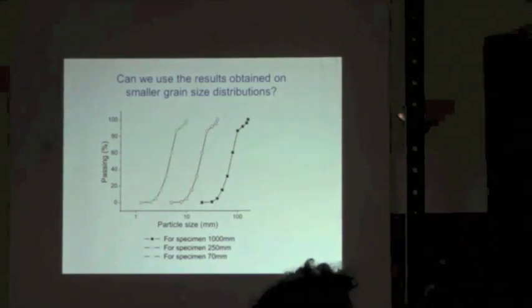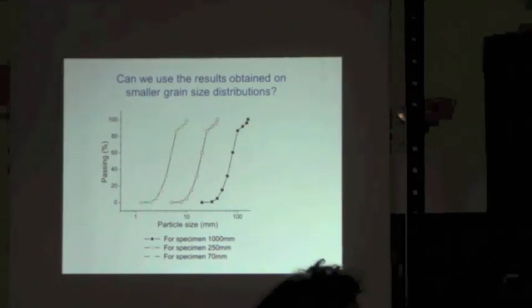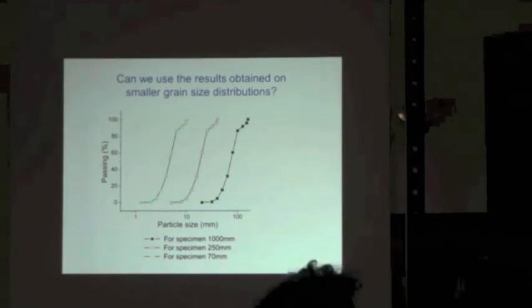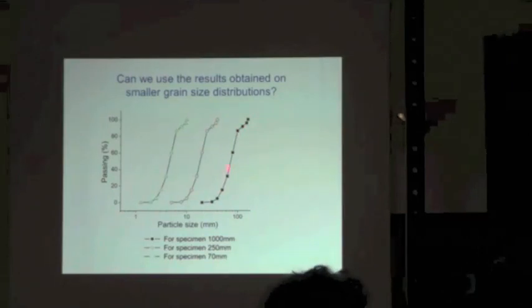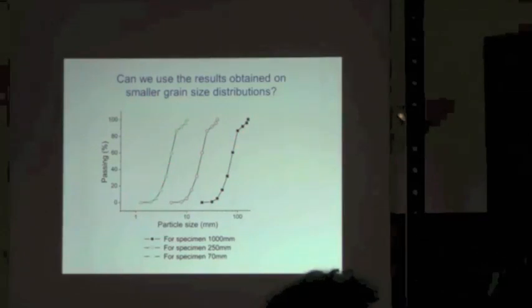For example, we could use the results to obtain one smaller grain size distribution. We take a homoesthetic grain size distribution — a smaller grain size distribution — and we assume that this is the field gradation. We can maybe test the homoesthetic gradation in the laboratory, but with smaller sizes.